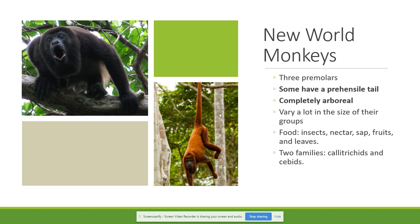Some new world monkeys have a prehensile tail. They are completely arboreal — there are no terrestrial monkeys in the new world. There's a lot of variation in their size. Their diet is very basic: insects, nectar, sap, fruits, and leaves. They are divided into two families: the callitrichines and the cebids. For the purpose of the exam, you don't need to worry about the families.